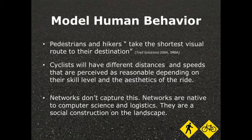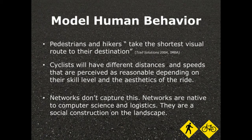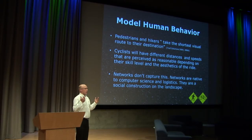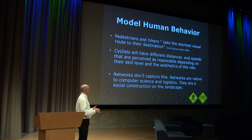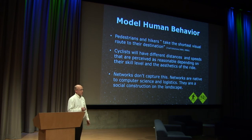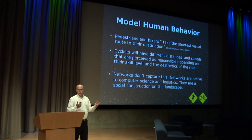Cyclists will have different distances and speeds perceived as reasonable depending on the aesthetics of the ride and the person. New or young cyclists in high school or grade school want to avoid really busy streets — they don't feel comfortable on them. Long-time cyclists don't really care. But by using a surface model, you can tune those things quickly. You can also tune aesthetics like whether people would walk as far next to industrial land use. In my experience, I don't believe networks capture how people move. Networks are native to computer science, making them easy to use in a GIS setting, but people don't actually operate that way in the landscape. Thank you.